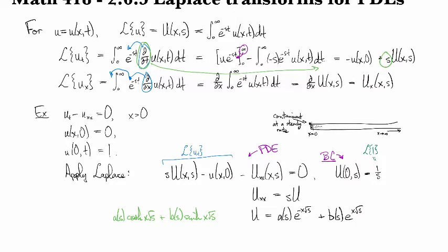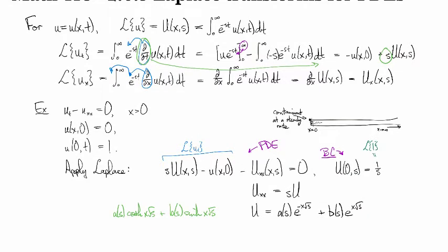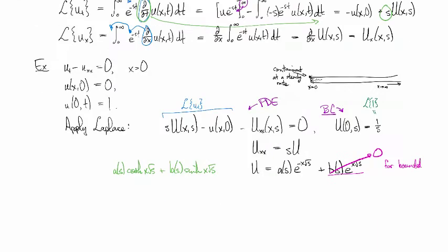Okay. So now looking at this solution that we've got here, going back to the model of like what it is we're trying to solve for with this contaminant, it's physically plausible. You would expect it to be the case that the solution is bounded, right? You wouldn't think that the amount of effluent here is just going to explode with x. So even though it's mathematically possible to have this term right here, we're going to make b(s) to zero or else we won't get a bounded solution.